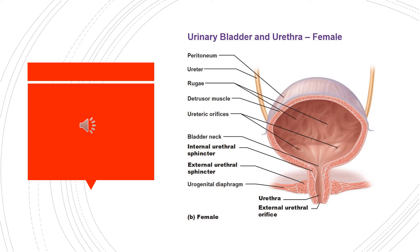During urination, the bladder muscles squeeze and two sphincter valves open to allow urine to flow out. Urine exits the bladder into the urethra, which carries urine out of the body. Because it passes through the penis, the urethra is longer in men, about eight inches, than it is in women, which is about 1.5 inches.